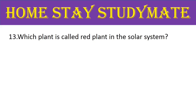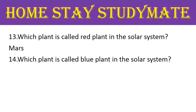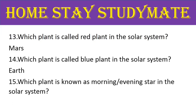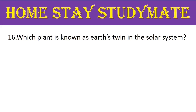Question number 13: which planet is called the red planet in the solar system? The right answer is Mars. Question number 14: which is called the blue planet in the solar system? The right answer is Earth. Next, question number 15: which planet is known as the morning and evening star in the solar system? The right answer is Venus.